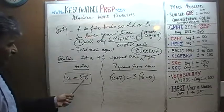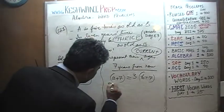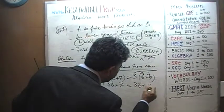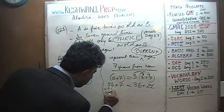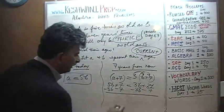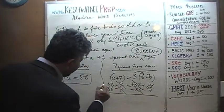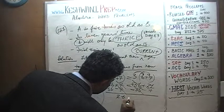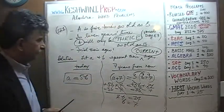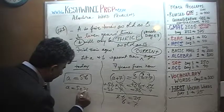The rest is very easy. A equals 5B — we substitute that in. So 5B plus 7 equals 3(B plus 7). Opening the parenthesis: 5B plus 7 equals 3B plus 21. Subtract 3B from both sides and subtract 7 from both sides. Positive 3B and negative 3B cancel out; positive 7 and negative 7 cancel out. We get 2B equals 14, which means B equals 7. If B is 7, then A equals 5 times 7, which is 35.